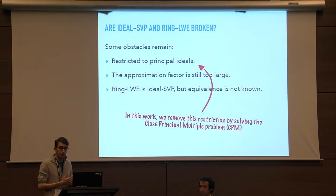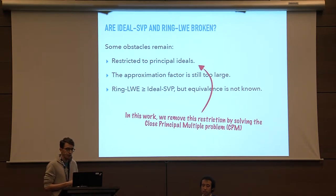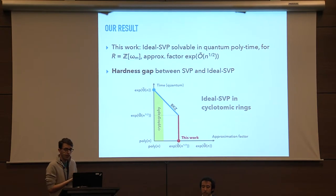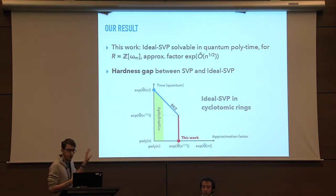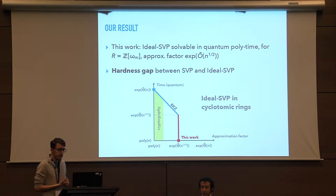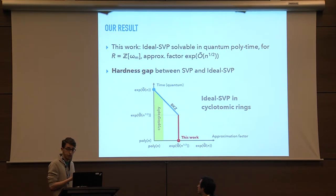Here I'm going to talk about removing the first restriction — taking what was doable previously for principal ideals and showing we can do the same for arbitrary ideals, by solving the close principal multiple problem. More precisely, our result is: we can solve ideal SVP in quantum polynomial time for rings of cyclotomic integers where m is a power of a prime, for an approximation factor exponential in the square root of n. This highlights a hardness gap between the generic version of SVP and ideal SVP — in the generic case the BKZ line continues straight down, but we break this line, showing that in quantum polynomial time we can do much better than generically.